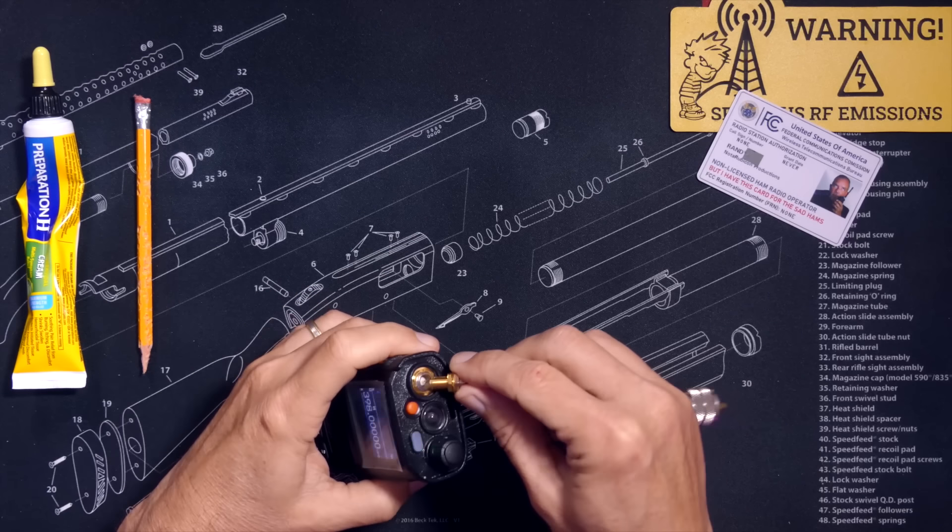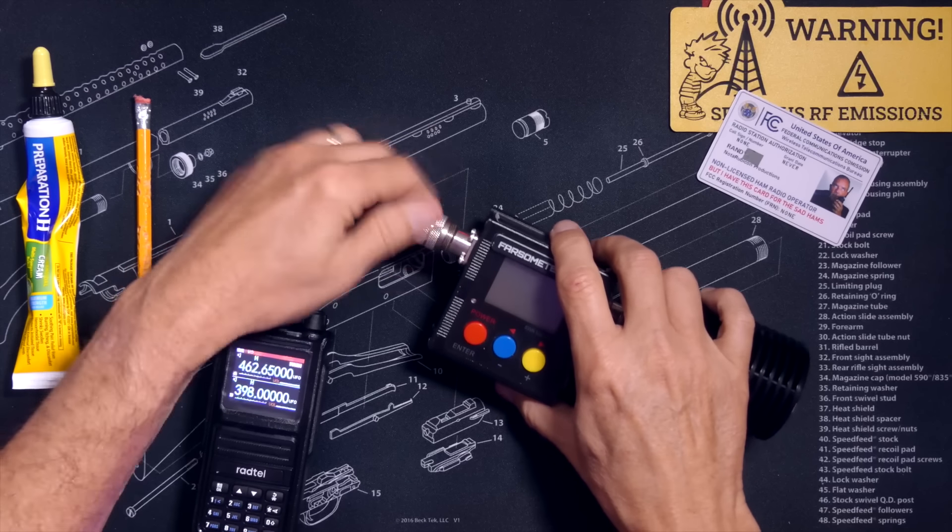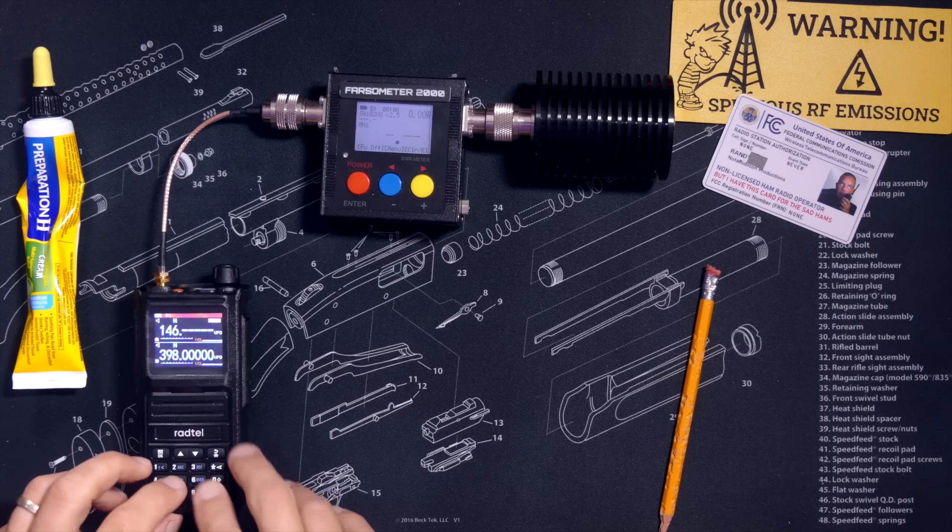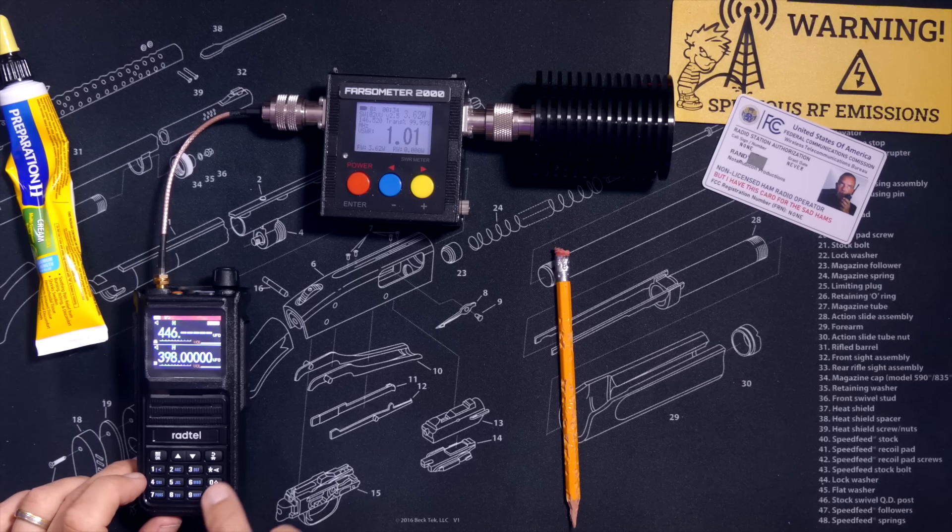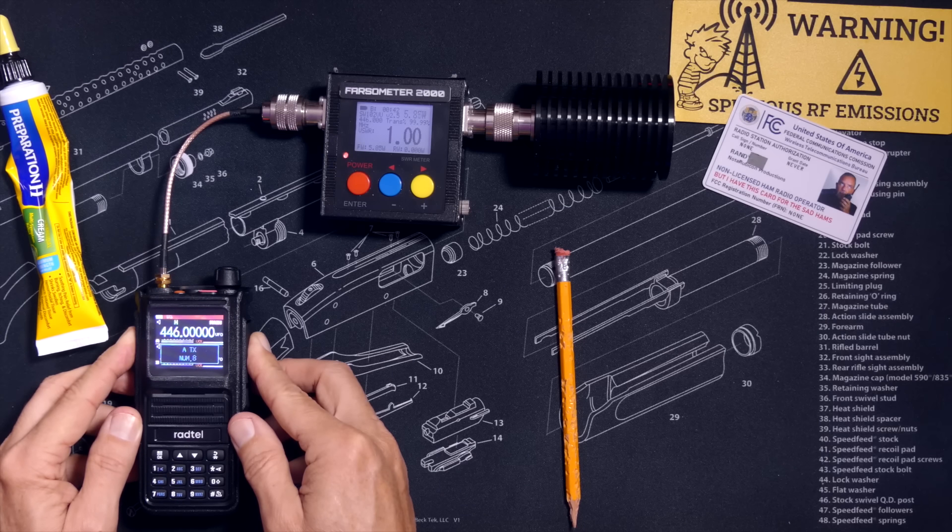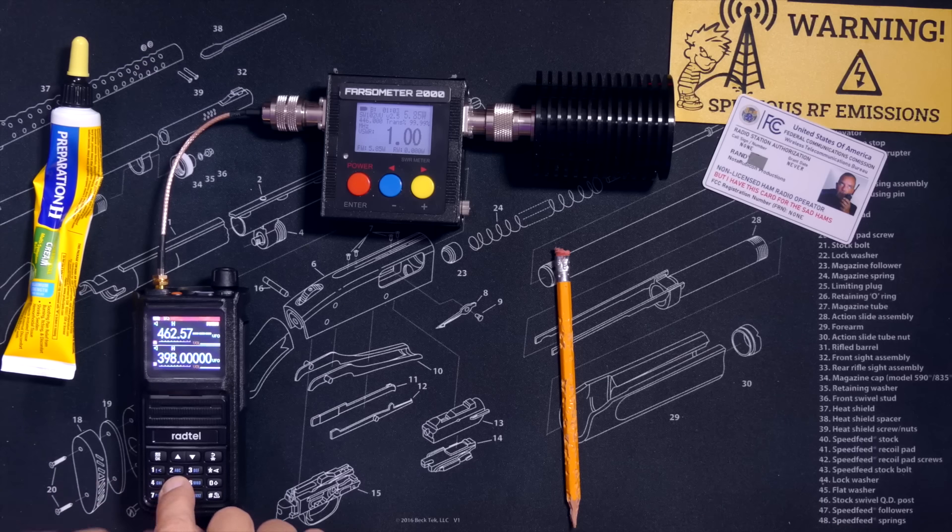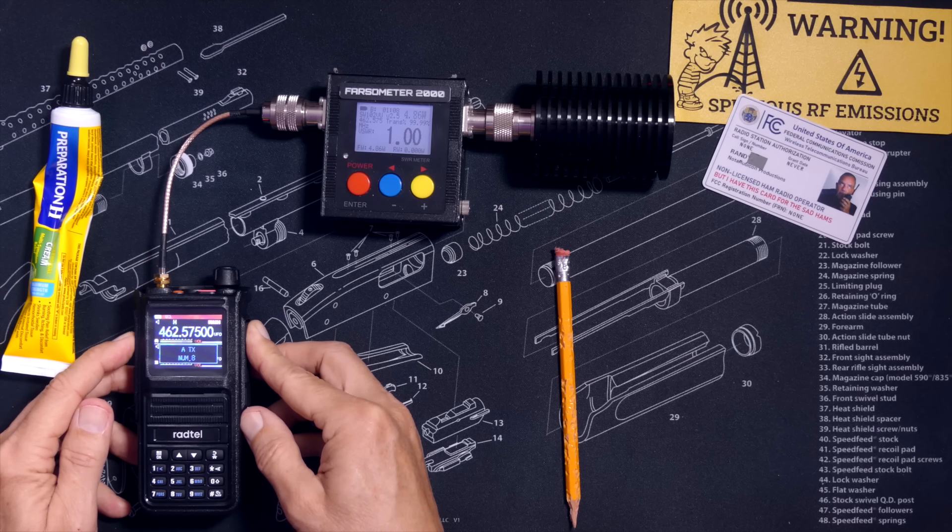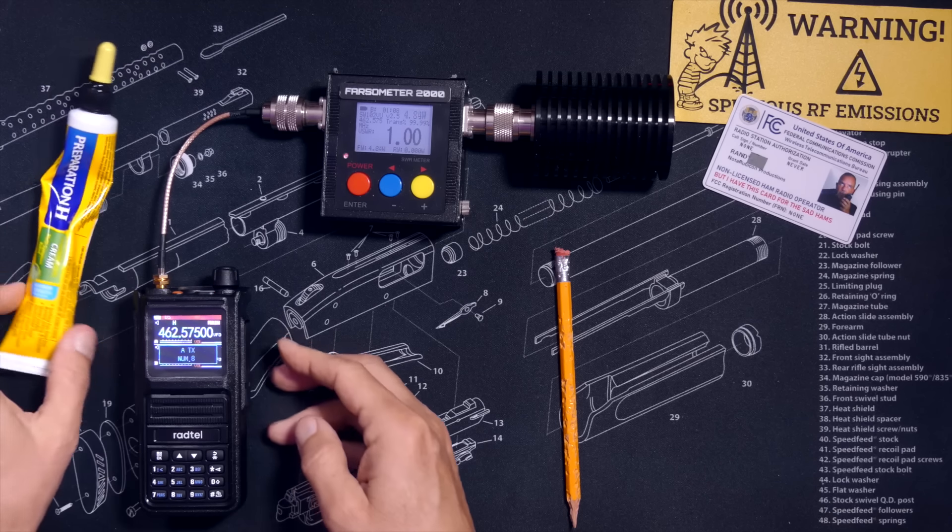The box says this radio outputs up to 5 watts, so let's test that. And as you can see, when transmitting on 146.520 MHz, the radio is putting out just under 4 watts. On 446 MHz, the radio is squeezing out almost 6 watts. And on GMRS channel 16, also known by the radio dorks as 462.575 megahertz, the radio is squirting out just under 5 watts. Not too bad for a cheap Chinese radio.